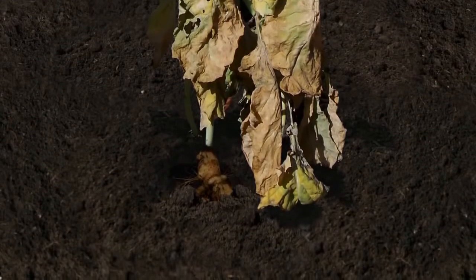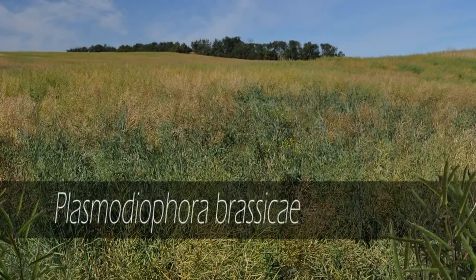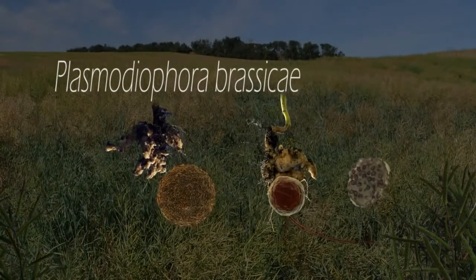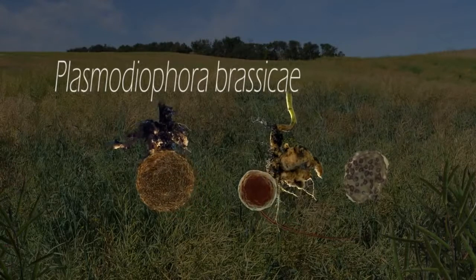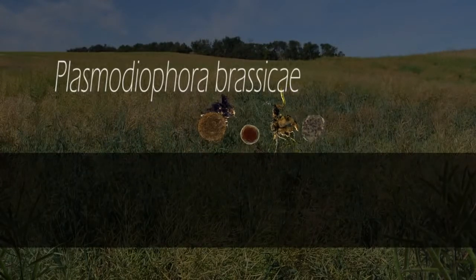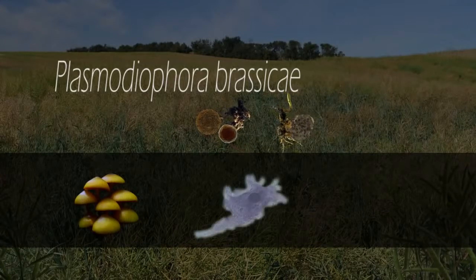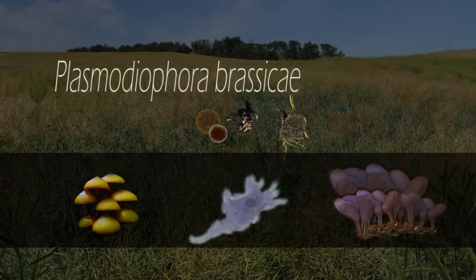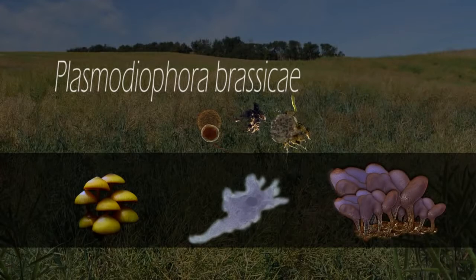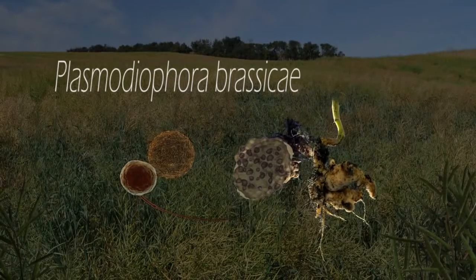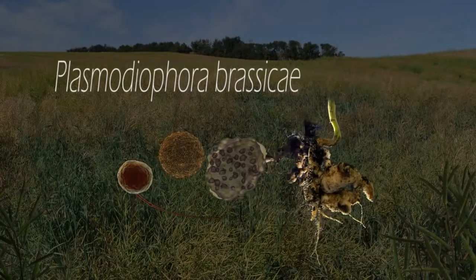Clubroot is caused by an organism called Plasmodiophora brassicae. It is an unusual organism in that it does not easily fit into the standard classifications of life. It is not quite a fungus, an amoeba, or even a slime mold, but it has some characteristics of each of these very different groups. The unusual nature of this organism is what makes it a challenge to control.